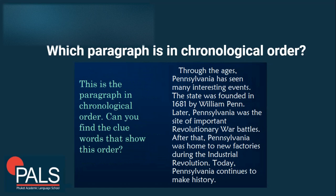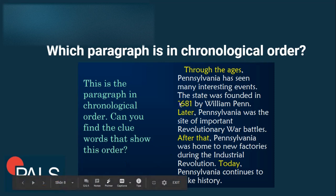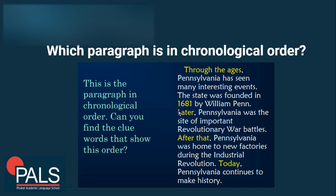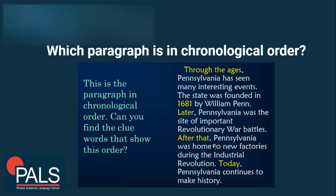The second paragraph is the one that uses chronological order. Can you tell me why? Take a look at this clue: 1681. It talks about time — it's a year. Specific time references like years, dates, or months are strong clues that a text is organized using chronological order.